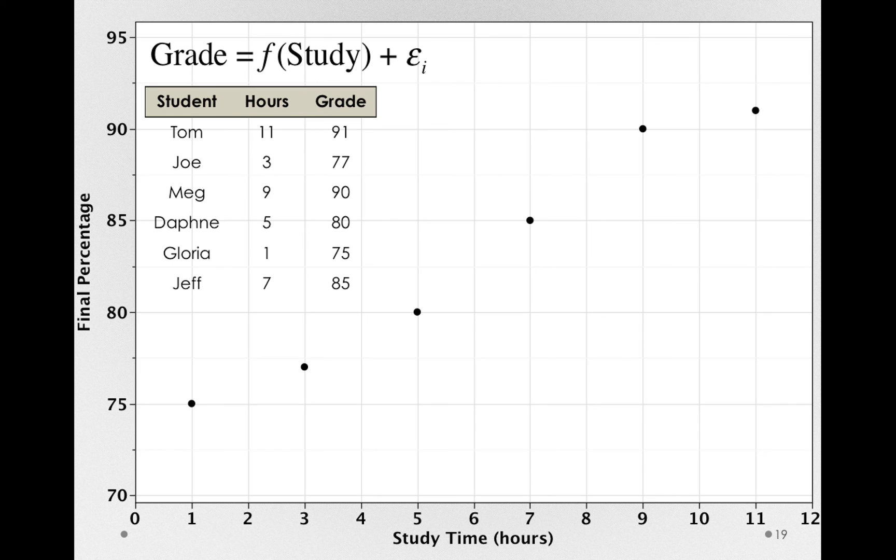Now in a scatter plot, we can see the relation between these variables pretty clearly. And of course, these are contrived data, so the relationship is meant to be clear. But in this case, what you're probably doing mentally is drawing a line of fit between these points.